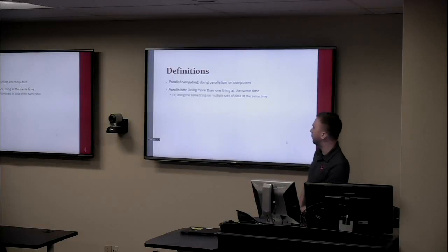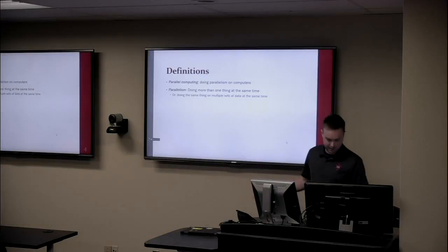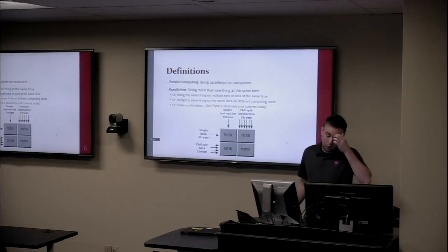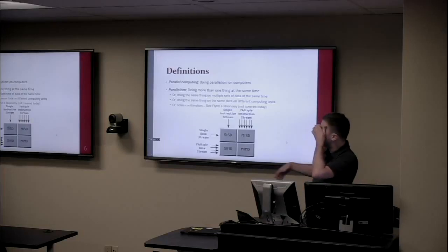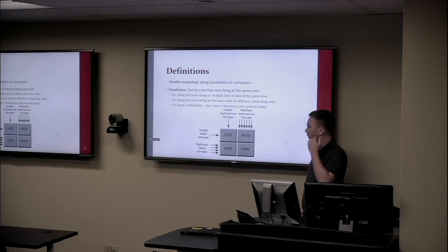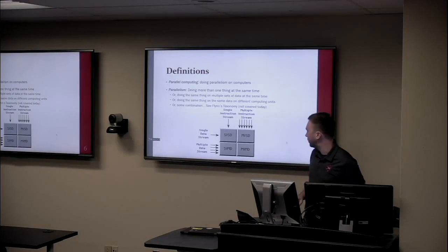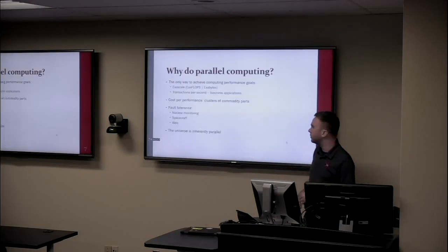Or maybe doing the same thing on multiple sets of data at the same time, or doing the same thing on the same data on different computers at the same time, or some combination. There's a formal way to characterize parallel computers called Flynn's Taxonomy — that's the thing to Google if you're interested in the theory behind different kinds of parallel computers.